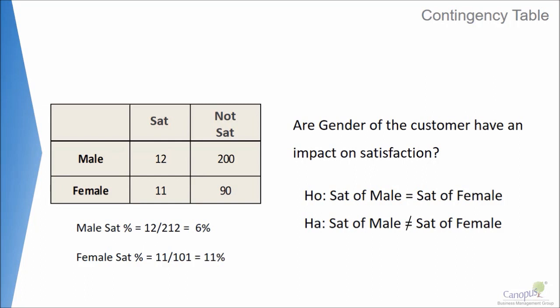Now, very obvious that 11 is much greater than 6 — in fact, it is almost double of 6, nearly double. So I could confidently conclude that male customers are not generally satisfied with the service, but female customers are generous in giving a satisfaction rating to the company or to its product.